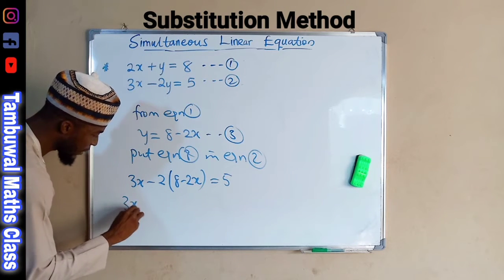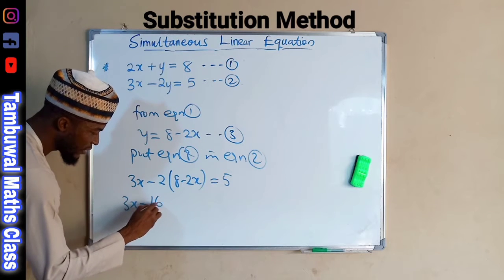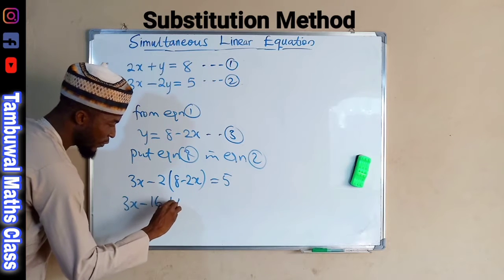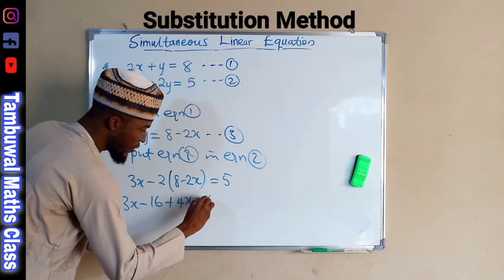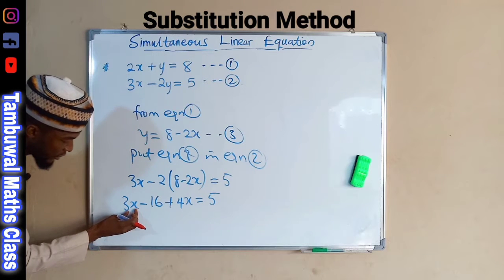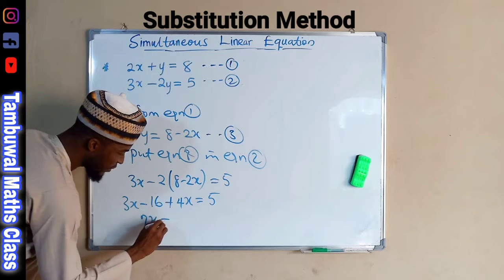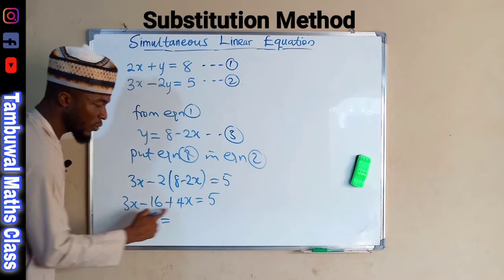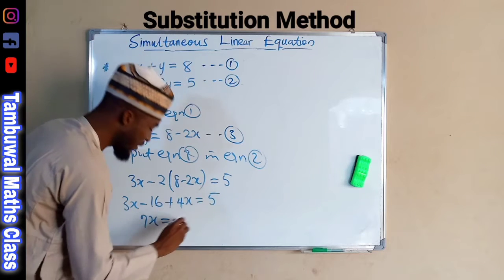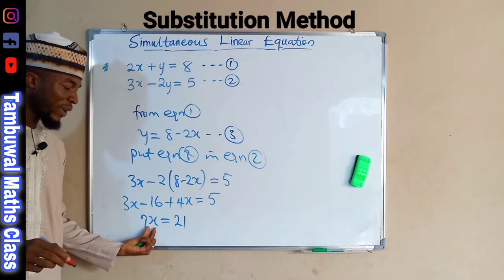Let's expand the parenthesis: 3x minus 2 times 8 is minus 16, and minus 2 times minus 2x is positive 4x, and this equals 5. Collecting like terms, 3x plus 4x is 7x. This is equal to 5 plus 16, because negative 16 crosses the equality sign and changes to positive, giving us 21.